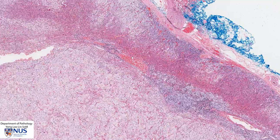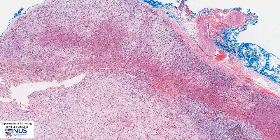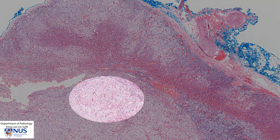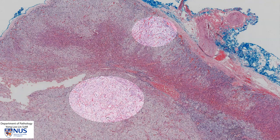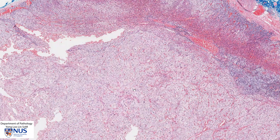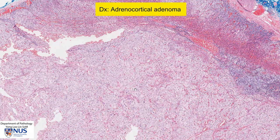Just to compare the appearance of the tumour cells with the zona fasciculata — you can see that they are very similar. The diagnosis here is a benign tumour of the adrenal cortex, so this is adrenocortical adenoma.